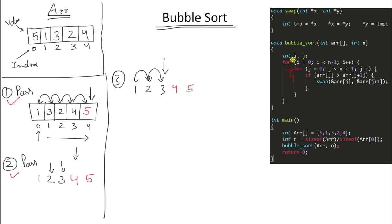Is there a better way to achieve an optimized algorithm? Yes. The idea is: when you run through the loop and don't swap a single time, it means everything is already sorted. We compared 1 with 2 — okay; 2 with 3 — okay; and we won't go further. If we don't swap at all in a whole pass, we should break and not go for any further passes.